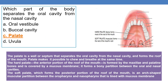Coming to the next question: which part of the body separates the oral cavity from the nasal cavity? As a whole, the palate separates the oral cavity from the nasal cavity. Palate is divided into two — hard palate and soft palate. It forms the roof of the mouth. Soft palate is muscular, hard palate is bony. Palate is a wall or septum that separates the oral cavity from the nasal cavity, and it makes it possible to chew and breathe at the same time.